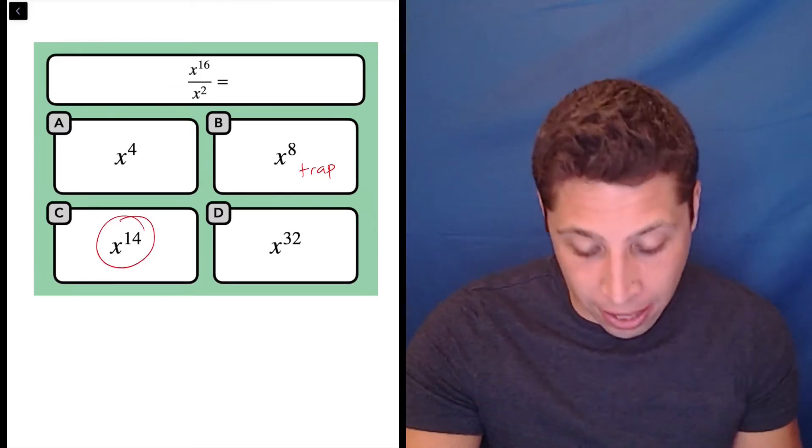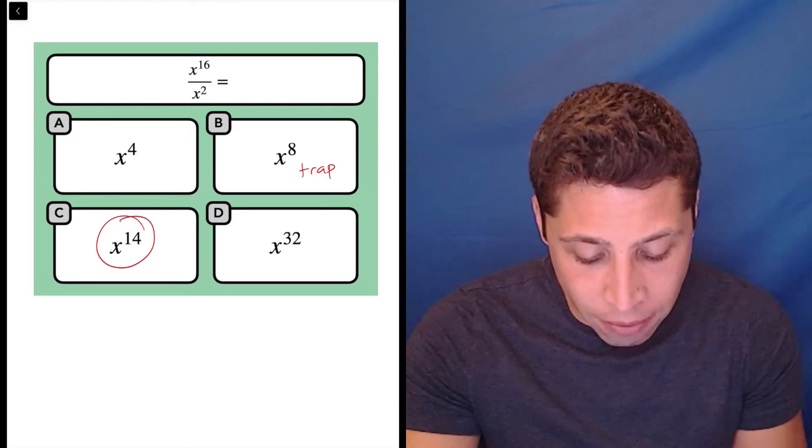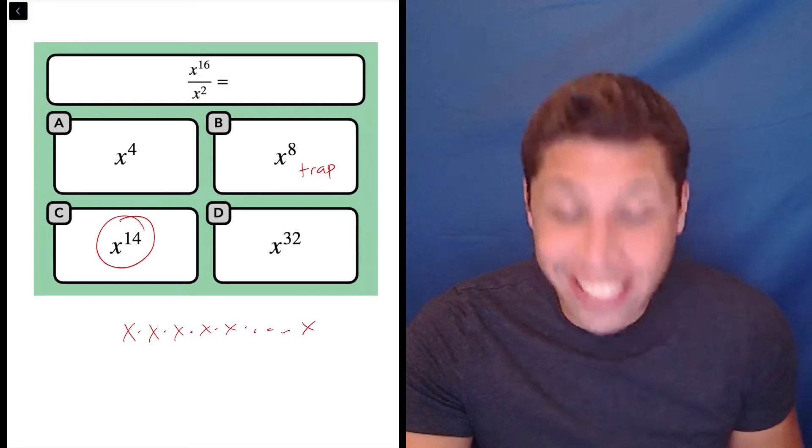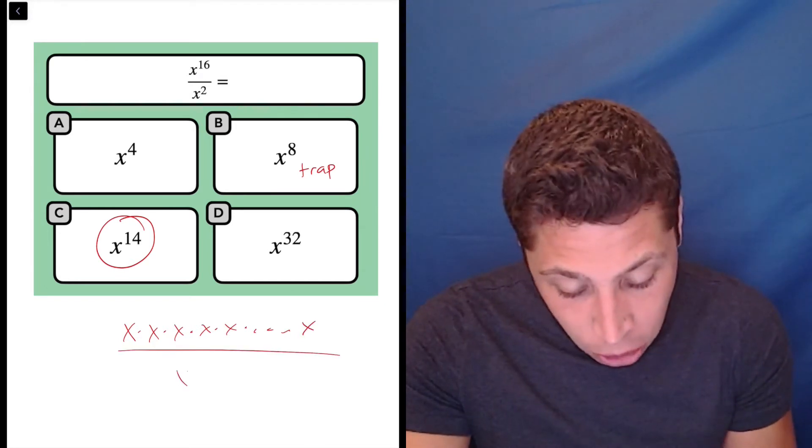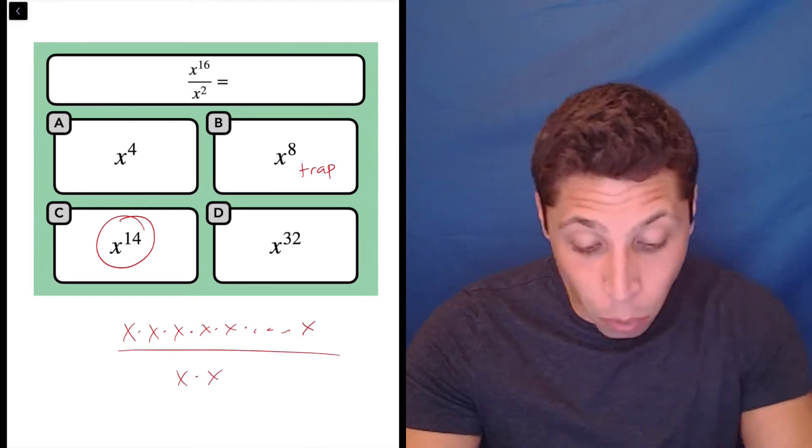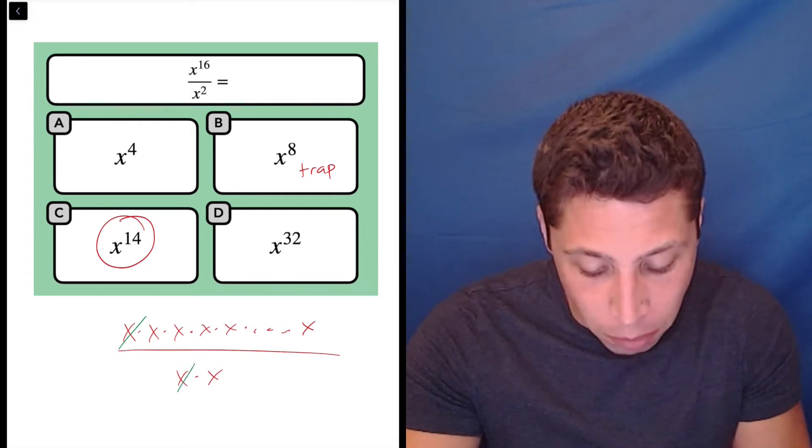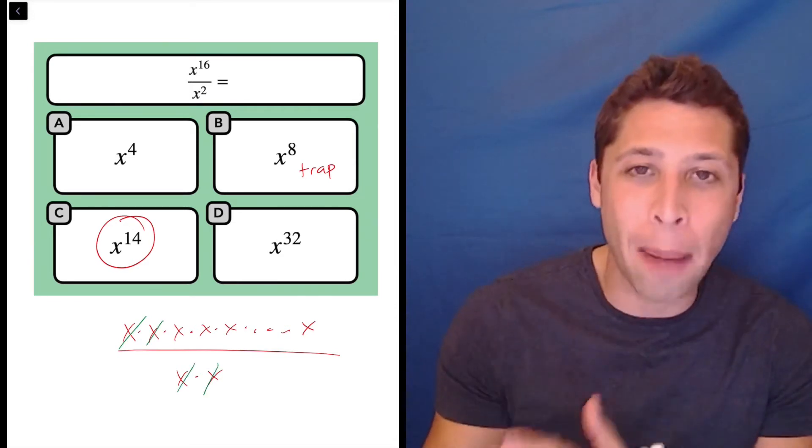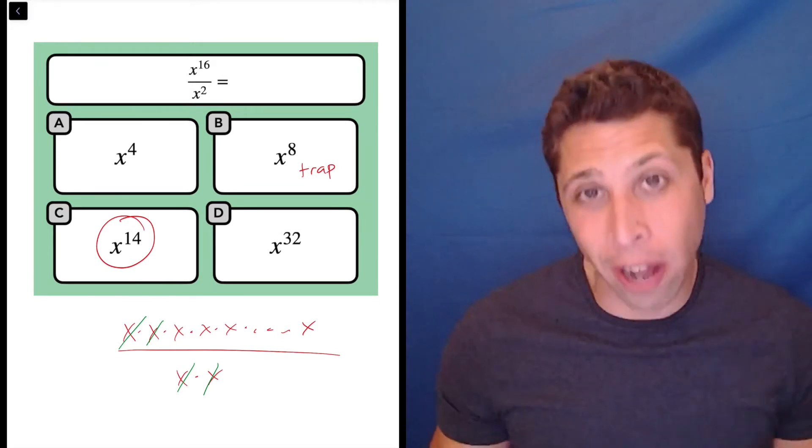Remember the reasoning behind this. What we really have on the top is 1, 2, 3, 4, 5, etcetera, all the way to 16 x's over 2 x's. We're going to cross them out like we would if we were reducing fractions. The 2 on the bottom, we cross out 2 on the top. So instead of having 16, now we're down to 14.